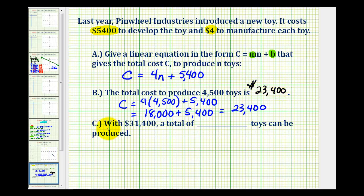Part C asks, with $31,400, a total of how many toys can be produced? So in this problem, we're given the total cost, and we want to determine how many toys we can produce.